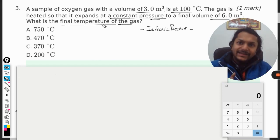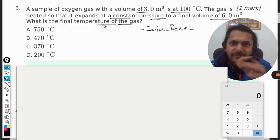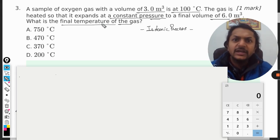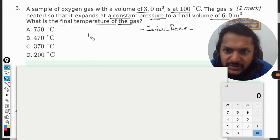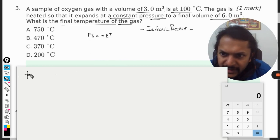See, ideal gas always follows the ideal gas equation, whichever process it is - whether isobaric, isothermal, adiabatic, isochoric, or whatever process it may be. But ideal gas will follow the ideal gas equation, meaning that PV = nRT will always be followed.